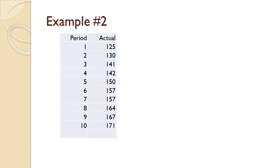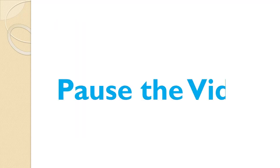For the data shown on the slide, we wish to compute the trend-adjusted exponential smoothing forecast. The forecast will begin in period 5. We'll use an alpha value of 0.40 and a beta value of 0.50. We wish to carry out the forecast for as far as is possible. Since you've seen an example already, let me suggest that you pause the video and try to work this problem on your own. Once you're done, you can use the video to check your work and spot any mistakes you might have made.